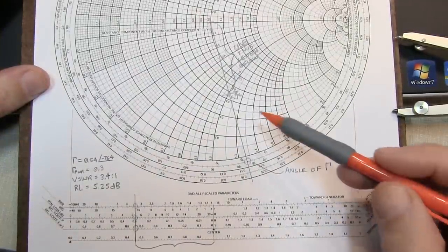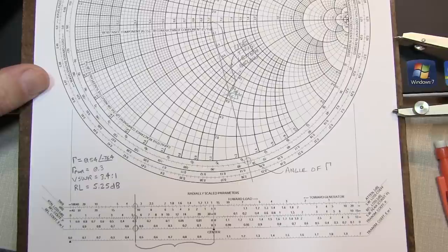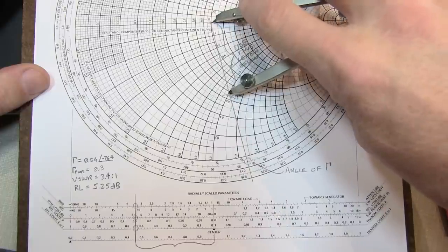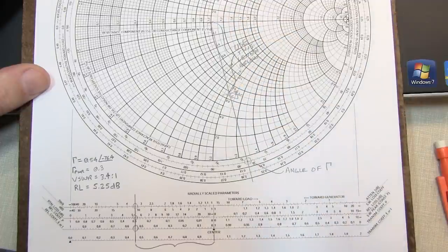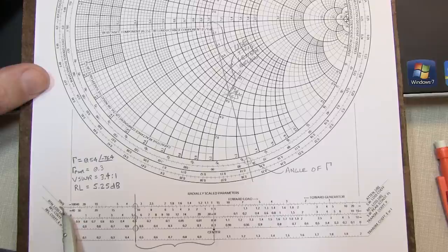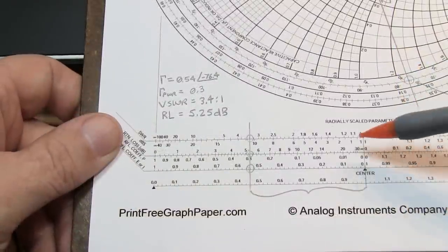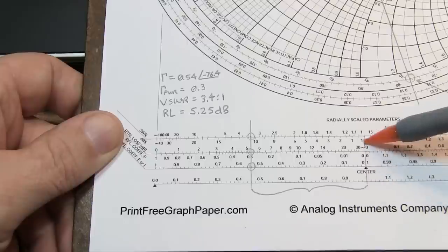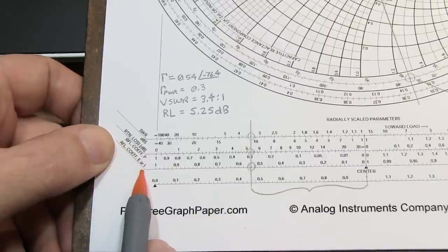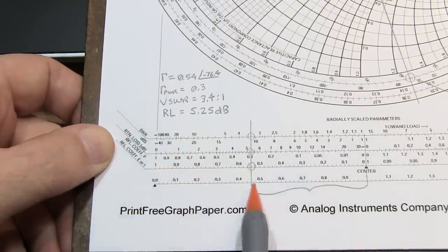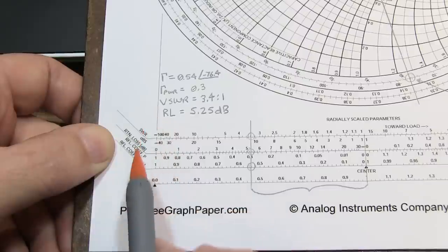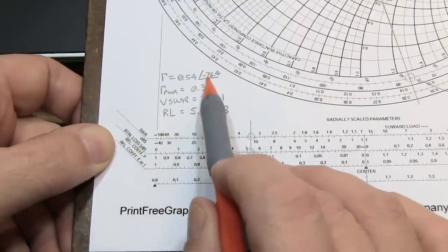With our normalized load impedance plotted here, we take dividers or a ruler and measure the distance from the origin to our load impedance, then transfer that measurement to these lower radial scales. The lower scale says reflection coefficient, and we see that crosses at 0.54, which is the magnitude or rho. For the angle, we look at the circumferential scale showing the angle of reflection coefficient, extending our line out to that scale, we cross right at about minus 76.4 degrees.